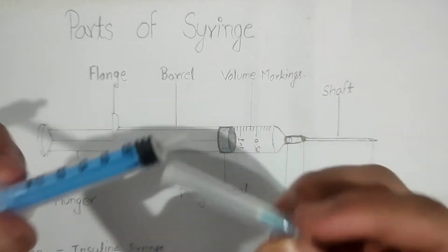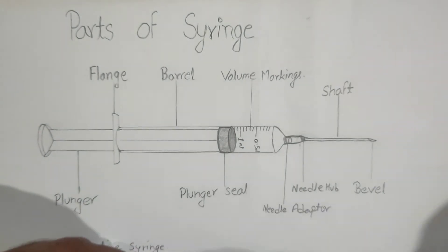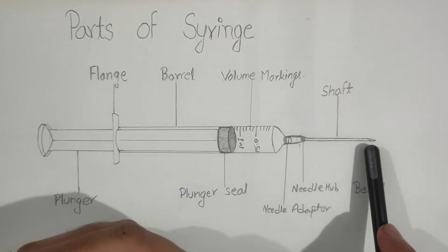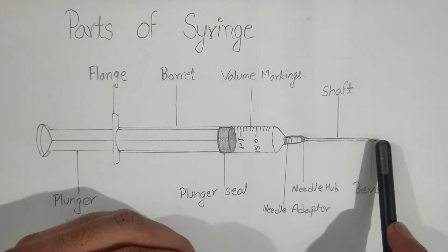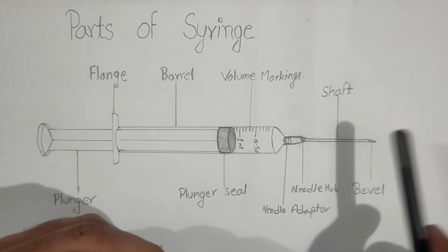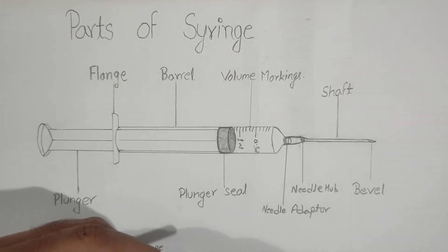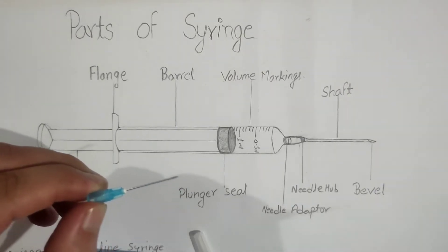Starting from the top, you can see this needle part which is sharp and pointed with a slantly cut hole, which is known as the bevel, and sometimes it is also known as the bevel angle.